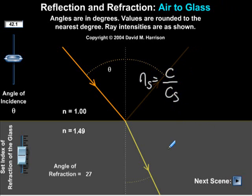That speed depends on the density of this second material. Here we can see that the refractive index in the substance is 1.49.